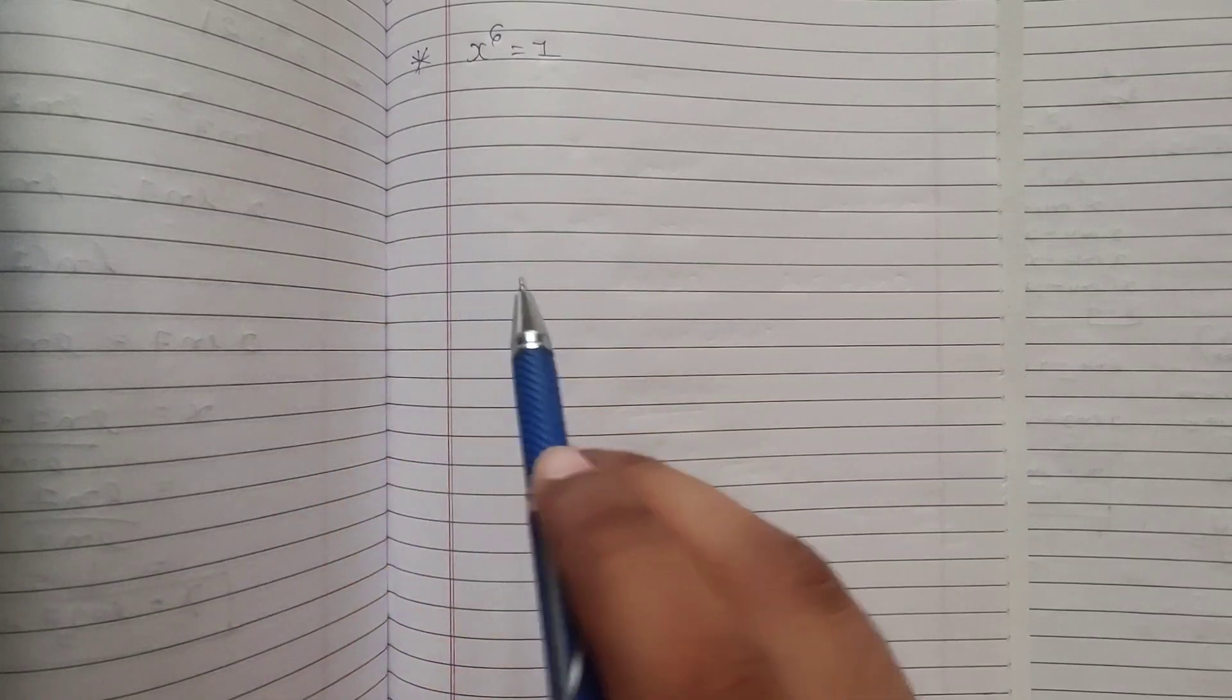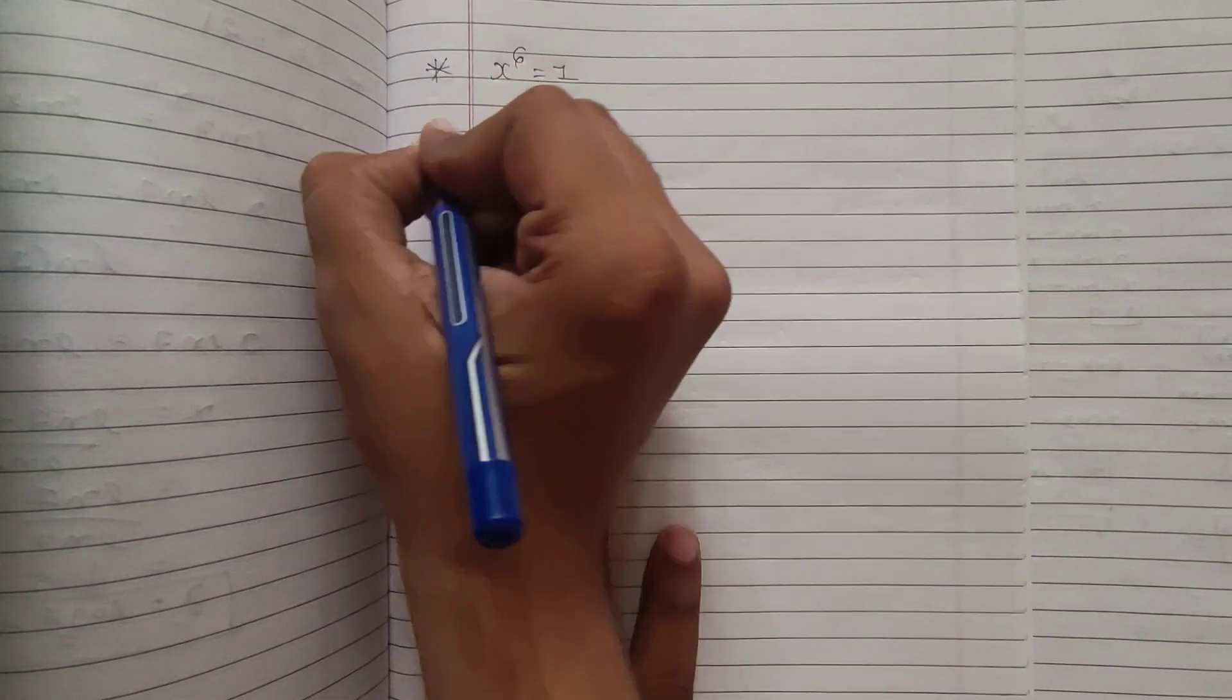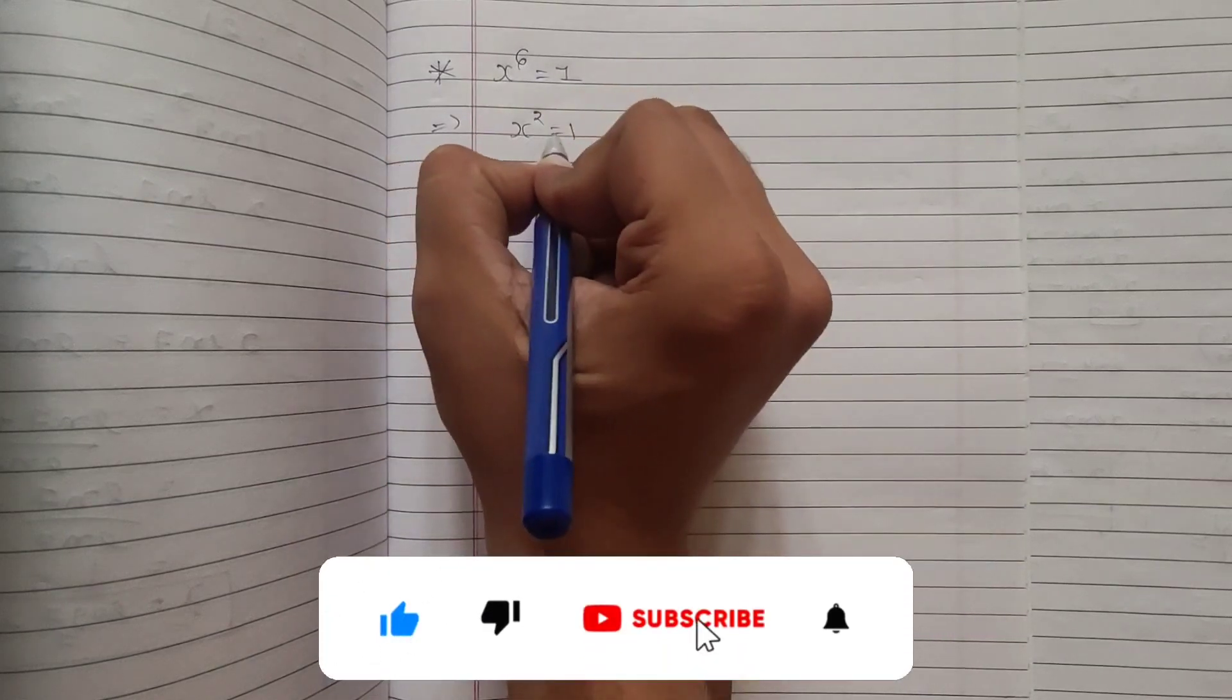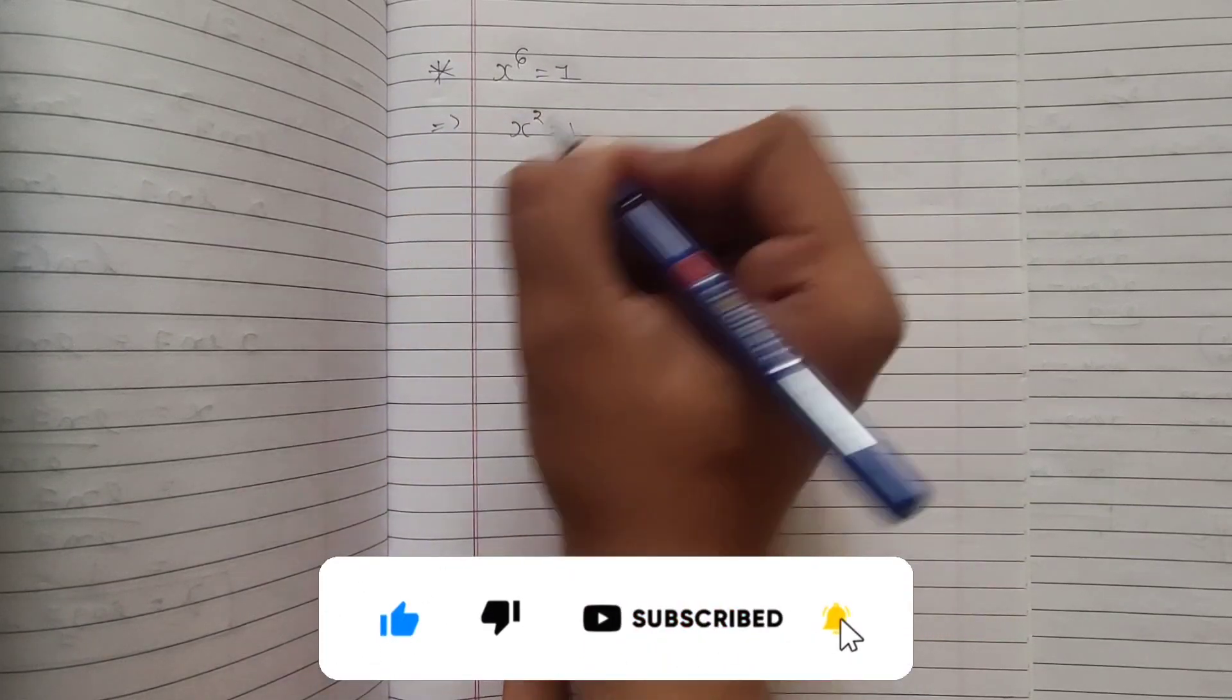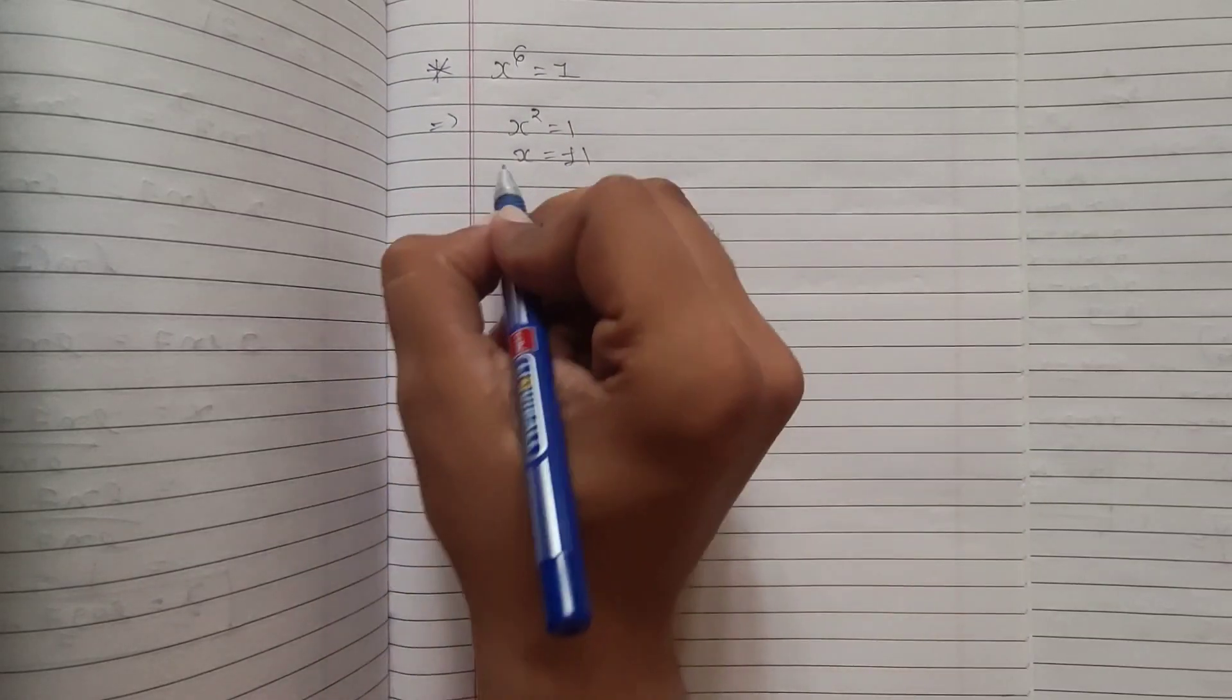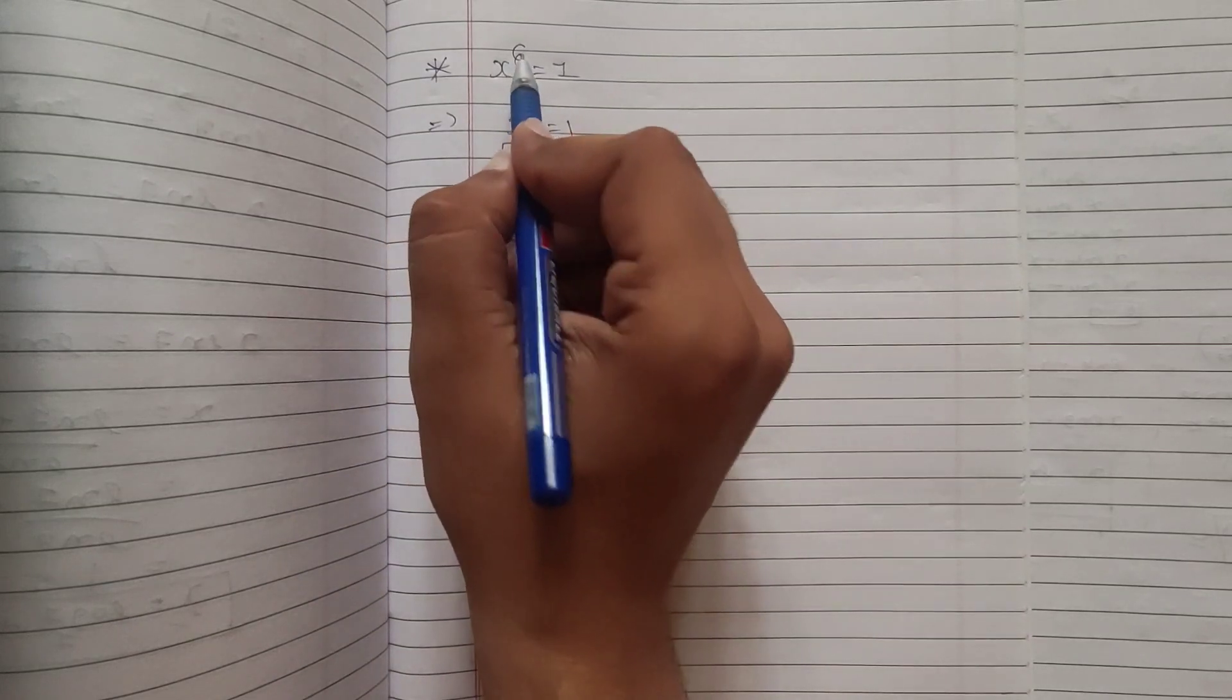Now, let us see how we can solve this kind of question. For example, first of all, if I have x squared equal to 1, suppose if I have x squared equal to 1 instead of x to the 6 equal to 1, then I can directly write x equal to plus or minus 1, right. This is our answer. But here I have x to the 6.